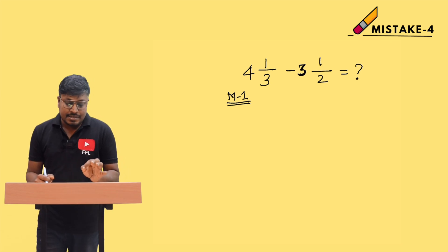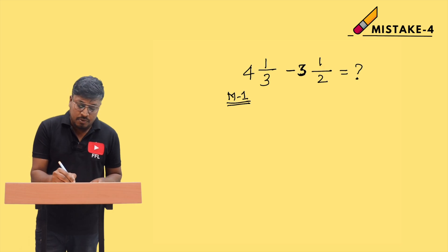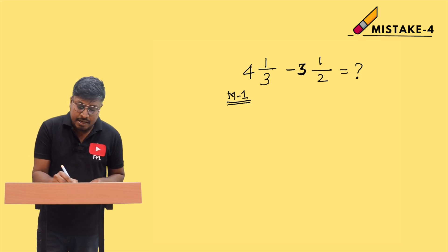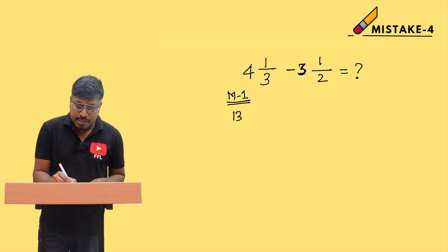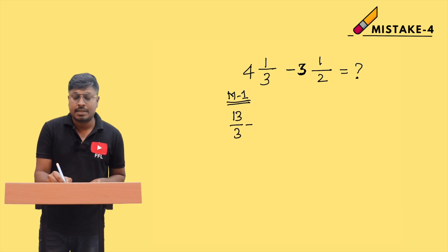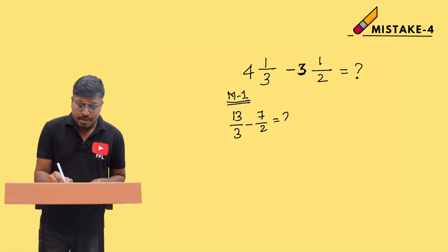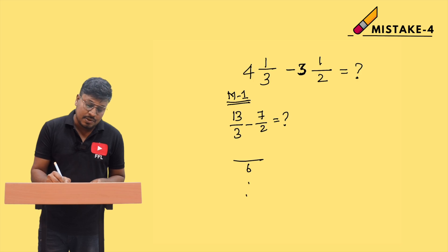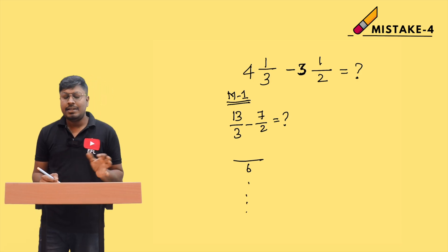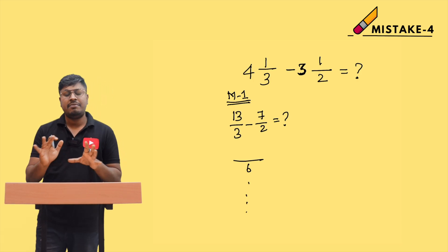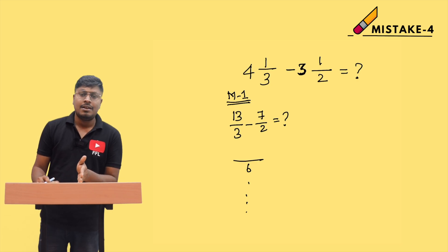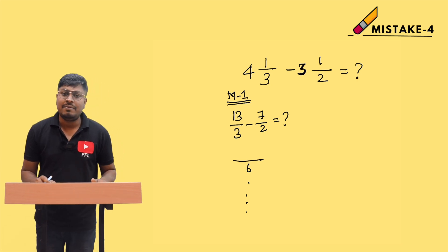In method number 1, 4 and 1/3 is written as (4×3 + 1)/3 = 13/3. Similarly, 3 and 1/2 becomes (3×2 + 1)/2 = 7/2. Then you take the LCM as 6 and solve to find the value of the question mark. This is one valid way to solve the question.